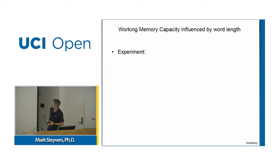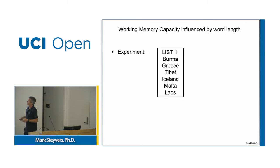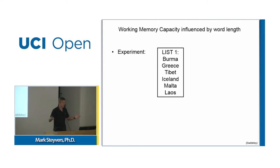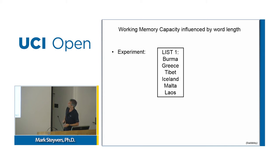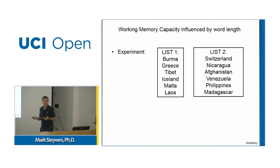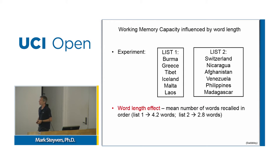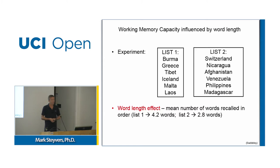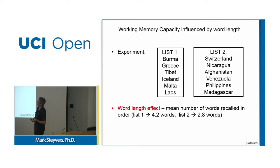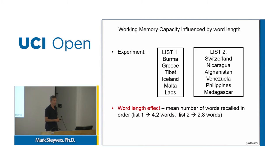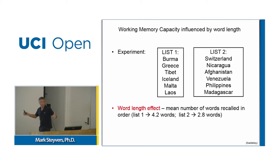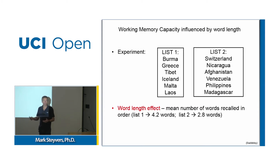You can do a simple experiment with six items to remember: Burma, Greece, Tibet, Iceland, Malta, Laos — fairly short country names. Or longer words: Switzerland, Nicaragua, etc. It's the same number of items, but clearly the second list would take longer to rehearse using your inner voice. And maybe not surprisingly, you find a word length effect: the mean number of words recalled in correct order is 4.2 from the first list and 2.8 from the second. So it's not just the number of items that matters — it's how long it takes to rehearse them.